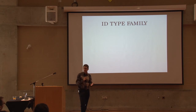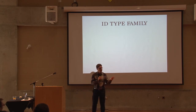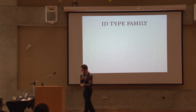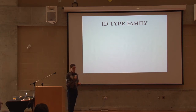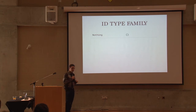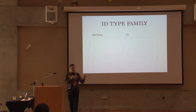The answer is Nothing — not Unit, which has one value, but Nothing, which has no values. So we'll use Nothing to represent an empty set of values, and that's going to be the identifier type for our empty total maps.